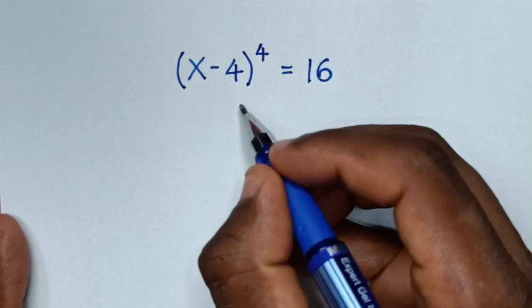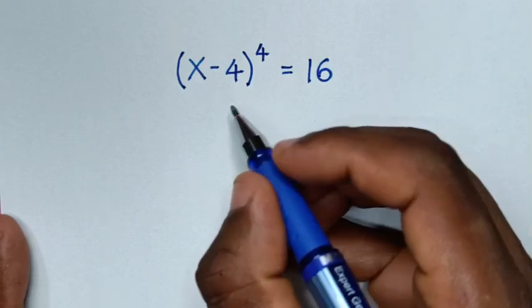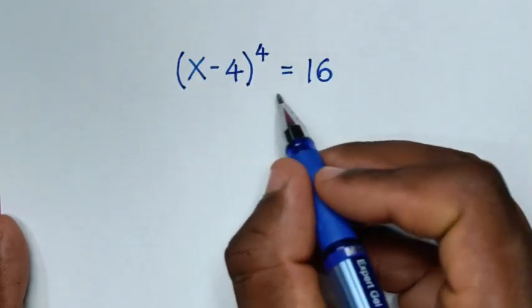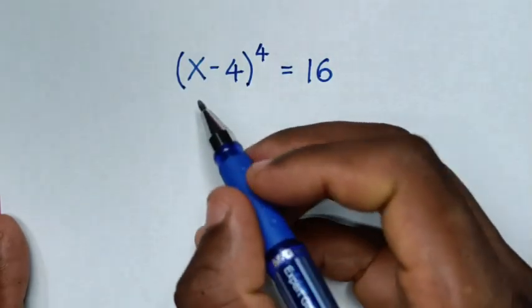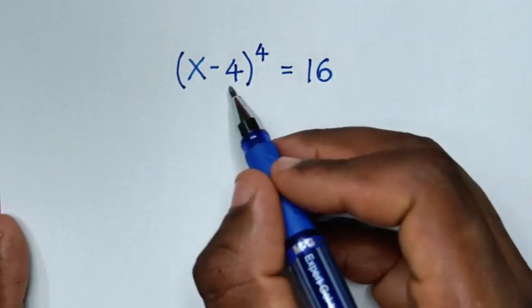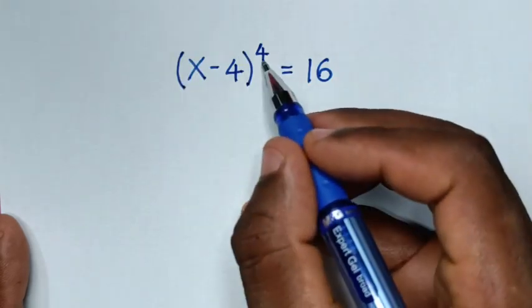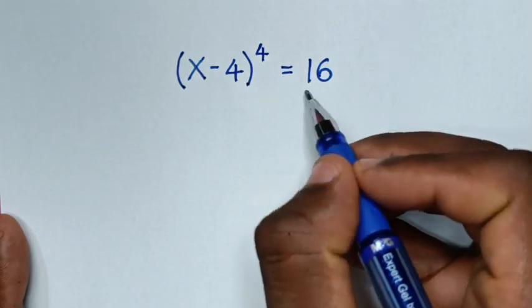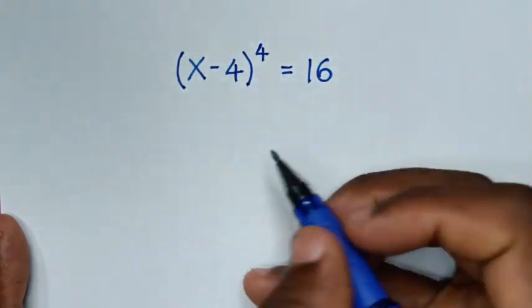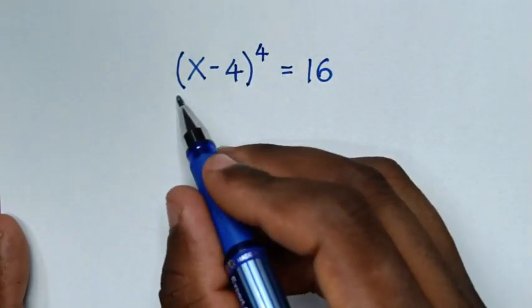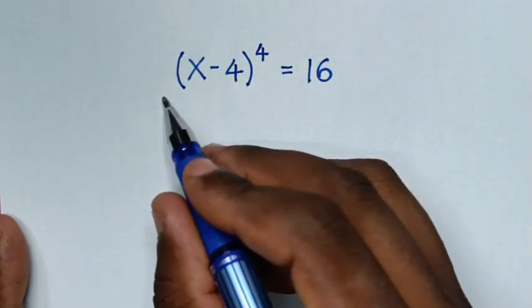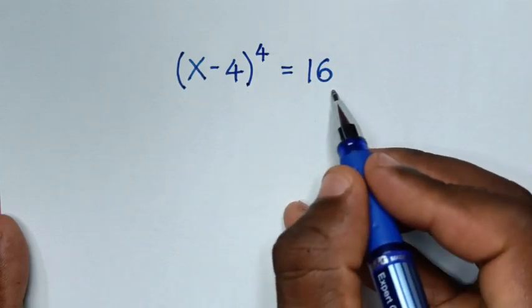Hello, you are welcome to solve this math problem, which is (x minus 4) bracket to the power 4 is equal to 16. We need to find the values of x from this equation.